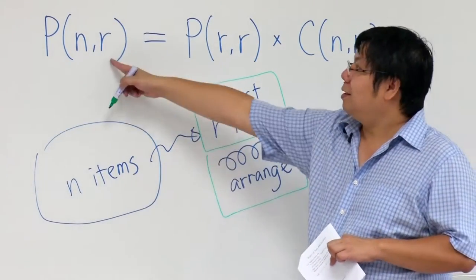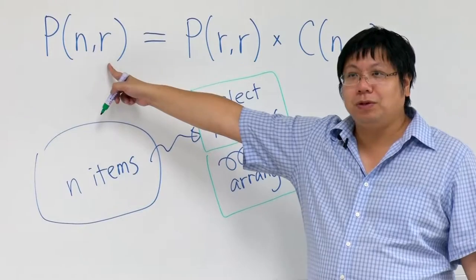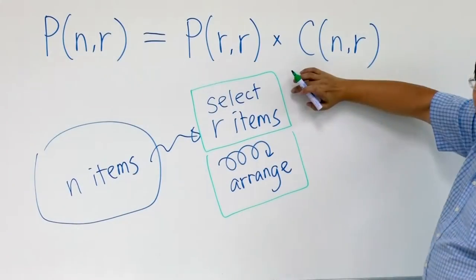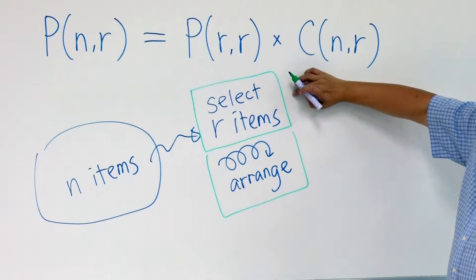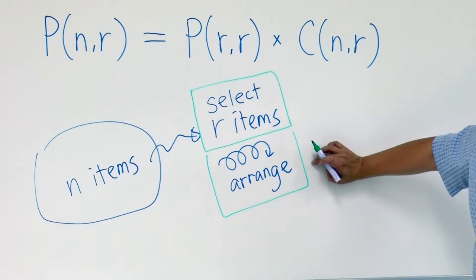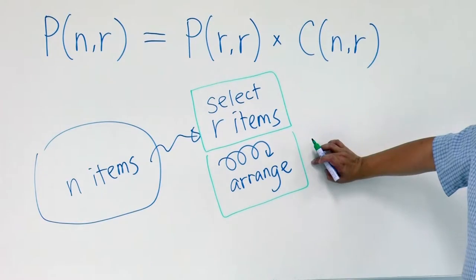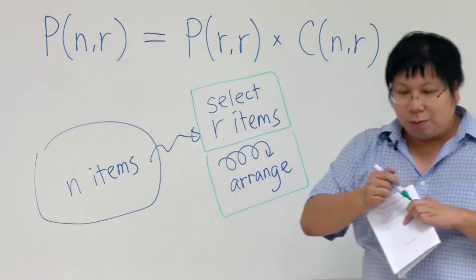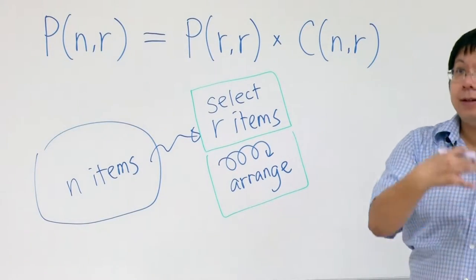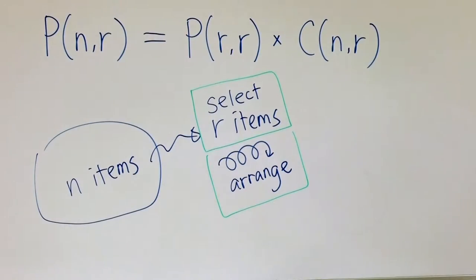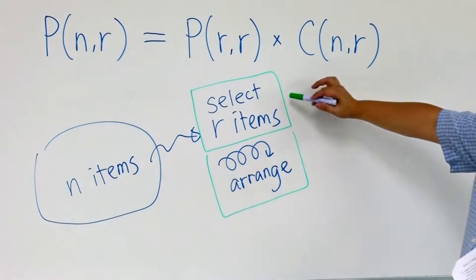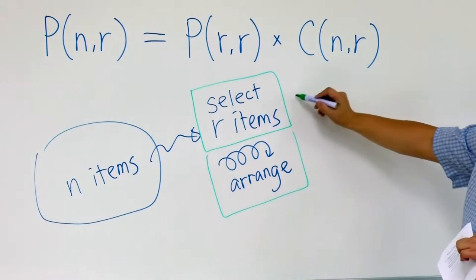The number of ways of P(n,r) that we want to calculate is equal to the number of ways to select r items times the number of ways to arrange these r items. That makes sense because we are using the rule of product. In order to get P(n,r) we need to select and then arrange — we first select and then we arrange.